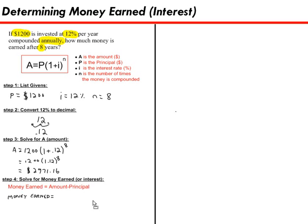I'll say money earned is equal to the amount which is what we found in step 3, $2,971.16 minus the principal or the amount that we started off with which was $1,200.